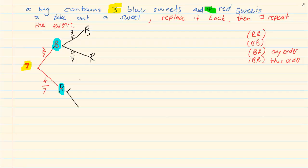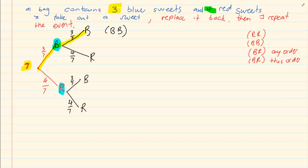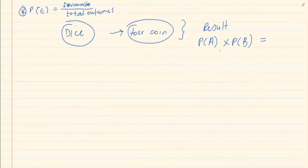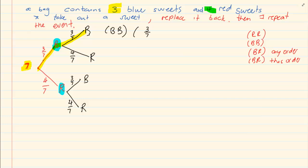For the red branch we also split it again — it is like starting all over again, so we have three over seven for blue and four over seven for red. If I go blue then blue again, that is BB. The final probability is P(A) times P(B): three over seven times three over seven. So the final probability of BB is nine over 49.